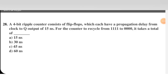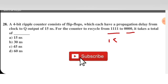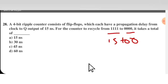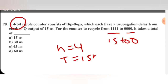Next question: a 4-bit ripple counter consists of flip-flops each with a propagation delay from clock to Q output of 15 ns. For the counter to recycle from 1111 to 0000, it covers all possible combinations from 4 bits. N equals 4 and T equals 15 ns, so total propagation delay equals 4 into 15 equals 60 ns.